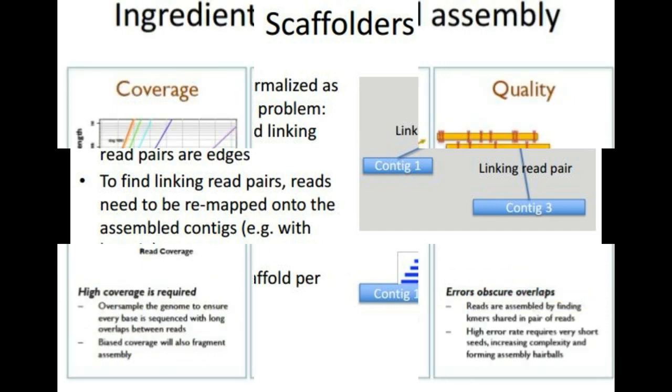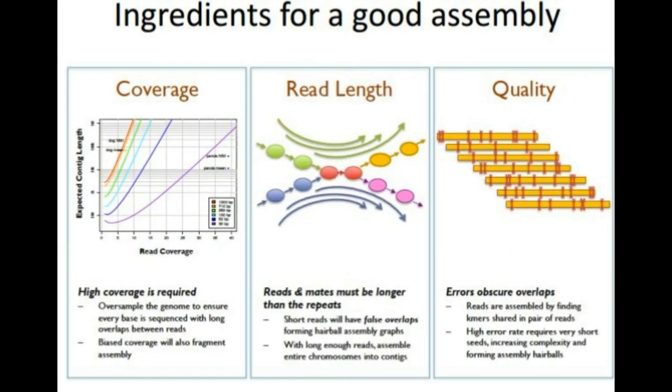In order to verify the correctness of our assembly, we can try to do checking of consistency. So we need to have consistency of mated reads, the regions with unusual depth of coverage. Too high potential collapse of repeat; if it's too low, then there is incorrect join. And if there's a large number of mismatches between the assembled sequence and the sequencing reads.